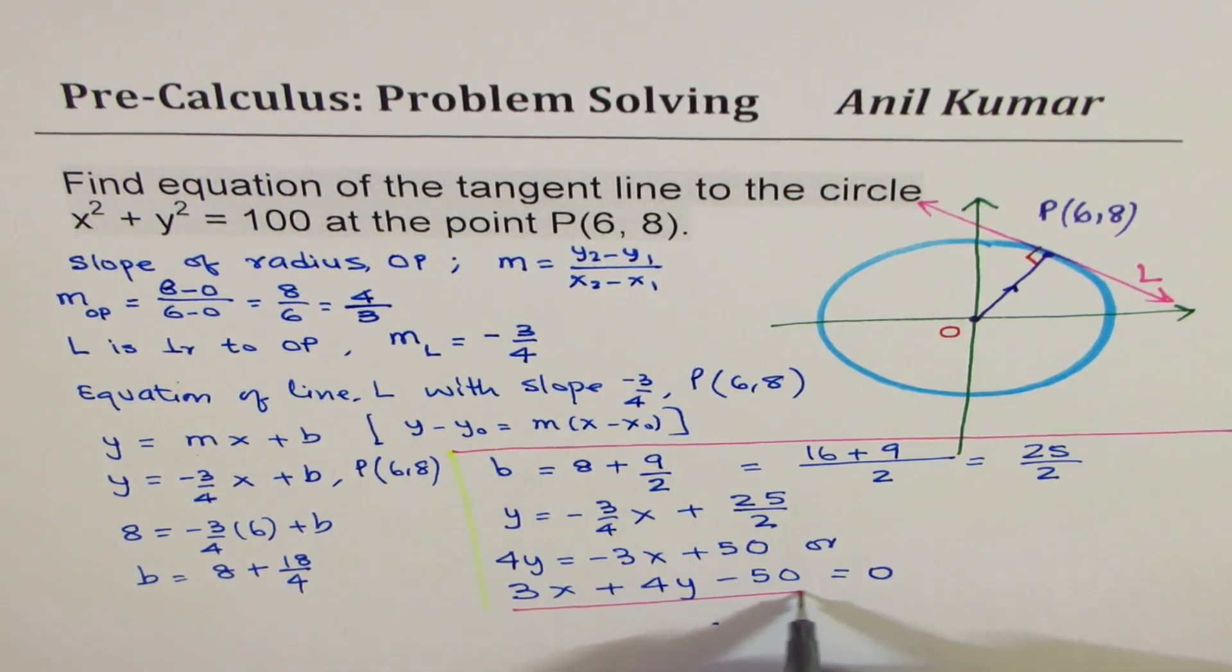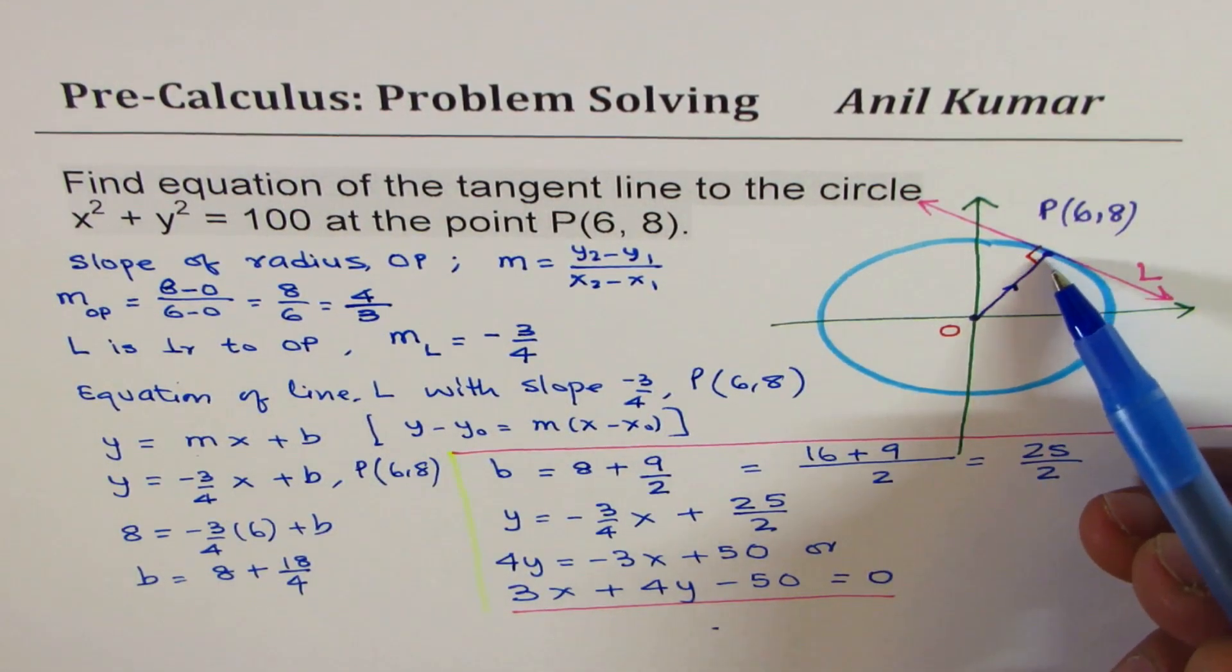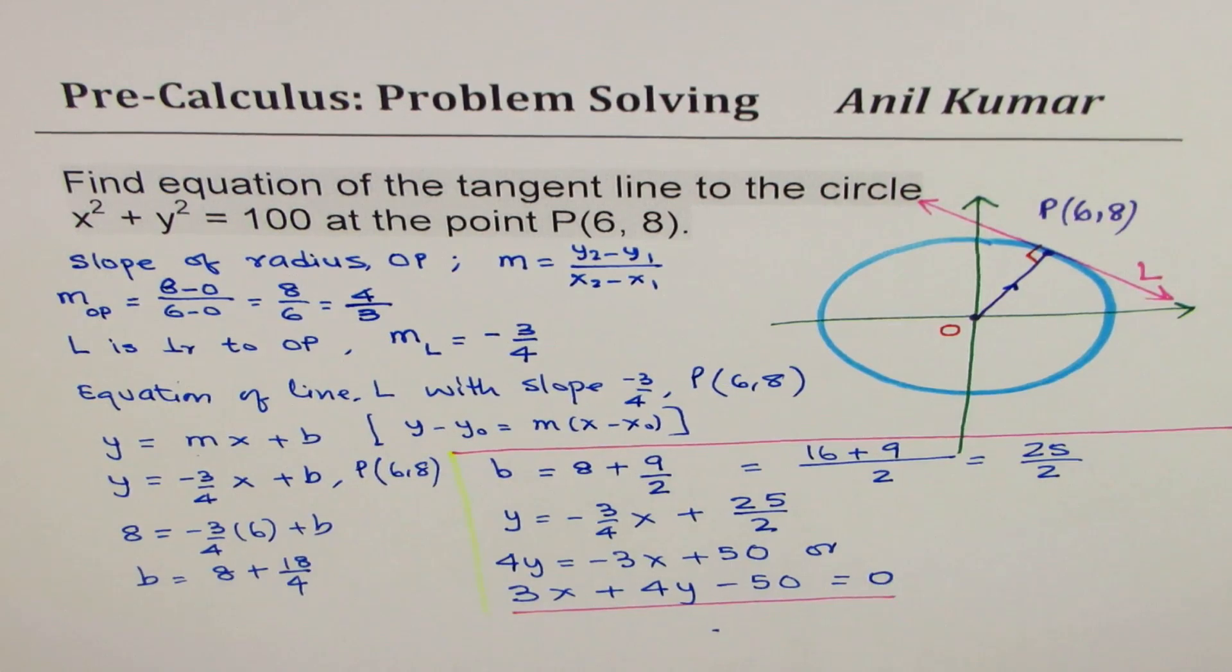So that is the equation of tangent line at the given point. So I hope that helps and brings all the things together. The important thing which you learned here is consider radius to be at right angles to the tangent, and then get the equation of the tangent. I hope that helps. Thanks and all the best.